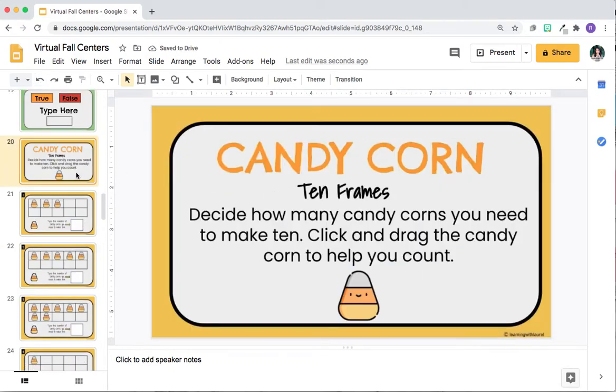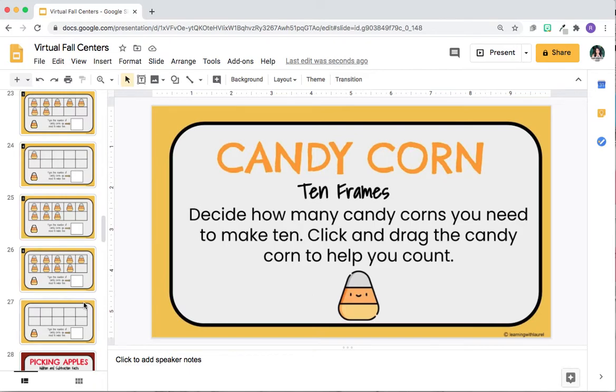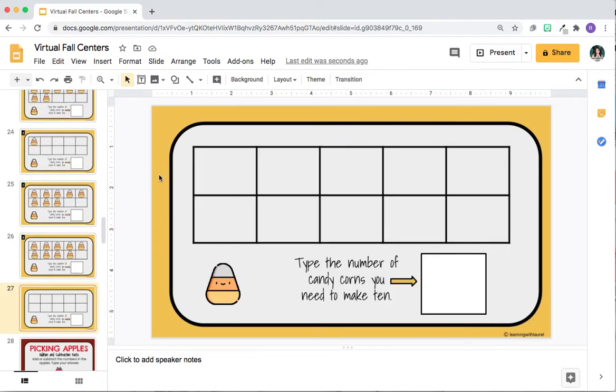Okay, so for the candy corn, I would recommend to click on this icon, and then on your keyboard, you would click command C, command V. And that would make a copy of this, and then command C, command V.